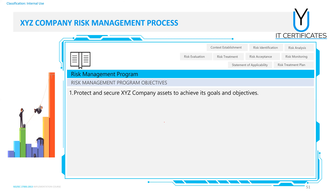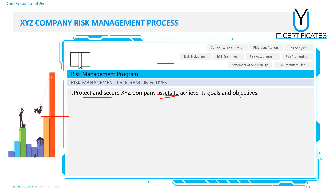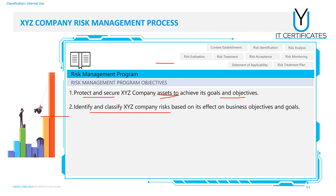Now let's check how XYZ Company will start implementing risk management processes. Number one, we define the risk management objectives — this is very important as it defines a lot of information in the risk management program. In XYZ Company, the objective is to protect and secure assets to achieve goals and objectives, and to make a risk assessment to know what risks exist against their network so they can protect those assets. We also need to identify and classify the risks and check the impact on goals and objectives.